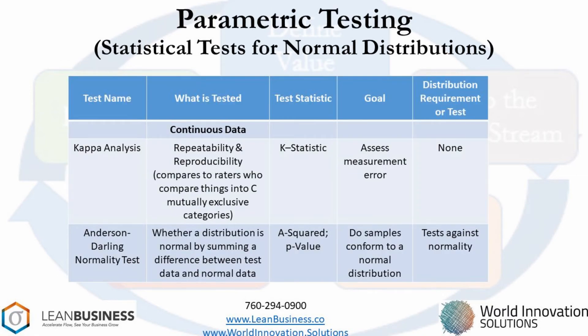The Kappa analysis tests whether two or more people that are ranking something are consistent, repeatable, and reproducible. The goal is to assess measurement error. An example could be college entrance examiners grading essays — the goal is to determine whether the two examiners grade or rate consistently. Another example might be two individuals reading a gauge: does one individual put a bias into the reading?